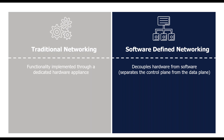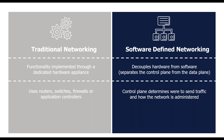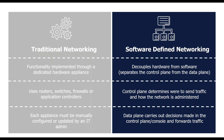In traditional networking, functionality is implemented through dedicated hardware appliances — routers, switches, firewalls, application controllers, et cetera. Each appliance must be manually configured and updated by the admin. With software-defined networks, we decouple the hardware from the software and separate the control plane from the data plane. The control plane handles administration of the network, including setting up packet processing rules that determine how to send traffic. The data plane carries out decisions made in the control plane and forces the traffic — essentially packet processing. SDN enables hardware to be controlled and managed from a centralized application.